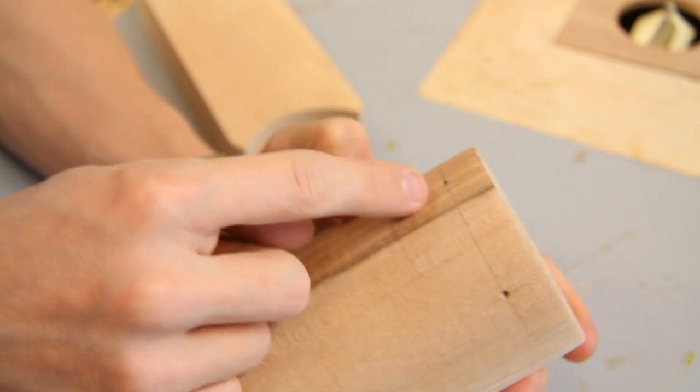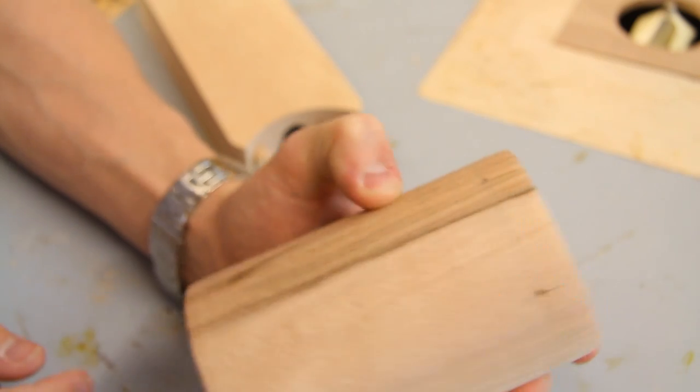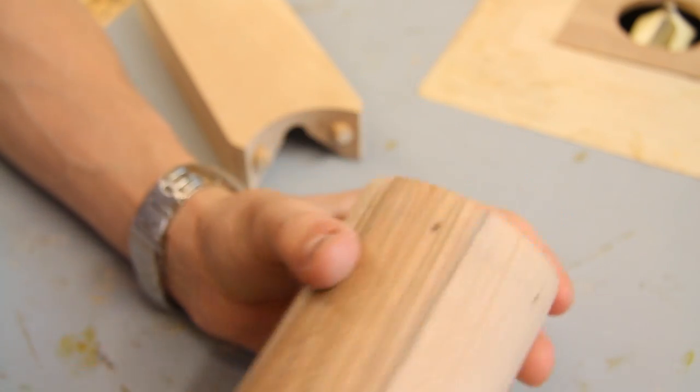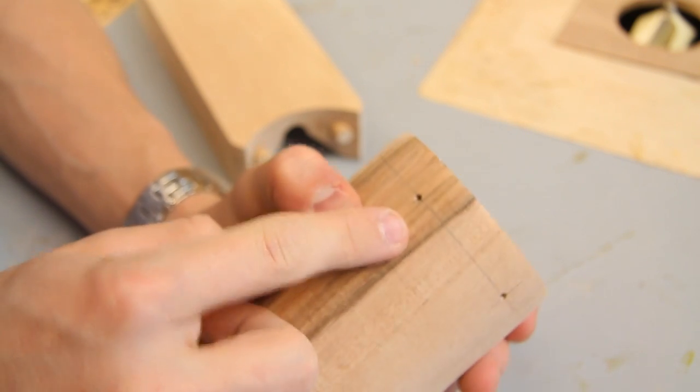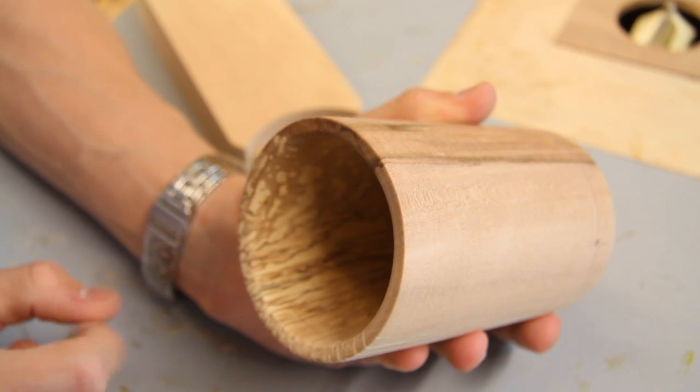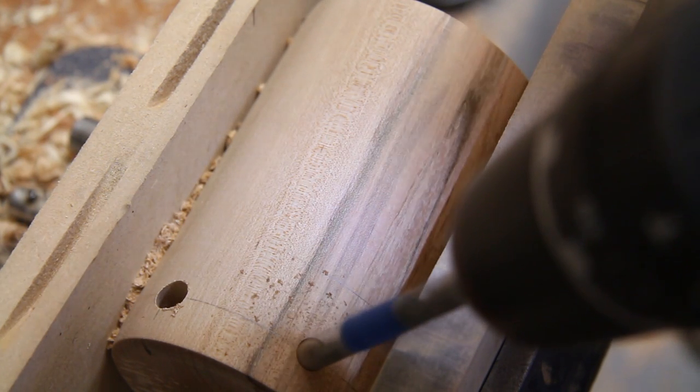Using those marks as a reference I was just able to mark these two points of where to drill. Now theoretically because I haven't hollowed all the way to the bottom I should be able to drill at these points without coming through to the inside. But because that is a risk I'm of course going to be very careful whilst I am drilling.